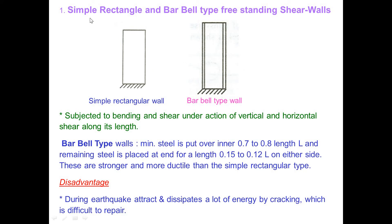Based on geometrical shape, the first type is the simple rectangular and barbell type of free-standing shear wall. Both are subjected to bending and shear under vertical and horizontal forces. The barbell type wall has minimum steel of about 0.7 to 0.8 percent placed on the inner face, with remaining steel placed at the end length of 0.15 to 0.12 on either side. Barbell type walls are stronger and more ductile than simple rectangular walls, though a disadvantage is difficulty of repair after earthquake cracking.